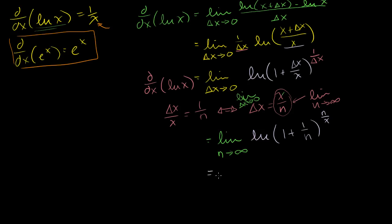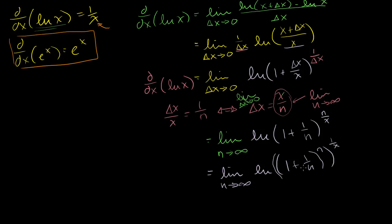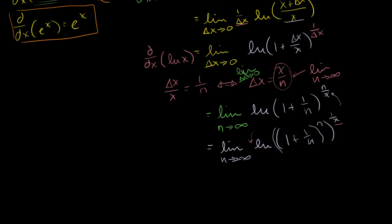Let me rewrite this expression. This is equal to the limit as n approaches infinity of the natural log of 1 plus 1 over n. I can separate out the n from the 1 over x, so this is to the n, and then all of that to the 1 over x. This is just an exponent property — if I raise something to the n and then to the 1 over x, I could just multiply the exponents and get n over x. So these two statements are equivalent. And using logarithm properties, I can bring the exponent out front as a coefficient.